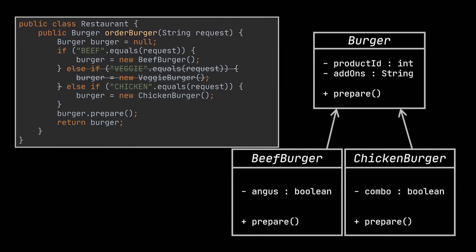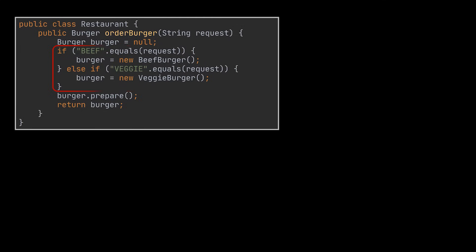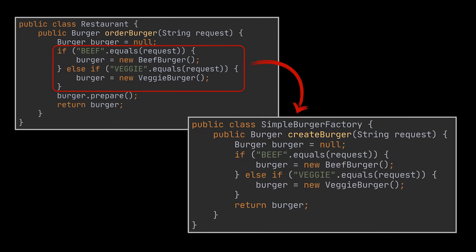When our restaurant grows and changes over time, we are going to add and remove recipes from the menu. So in the second version of our app, we removed the veggie burger and added the chicken burger option. You can clearly see that the variety of food we can deliver is getting in the way of closing this code for modification. And as long as our restaurant is open, this code is going to remain open. To fix this, what we do is take our burgers creation code and encapsulate it,